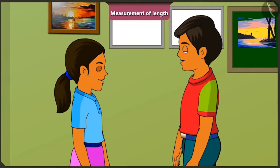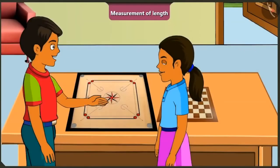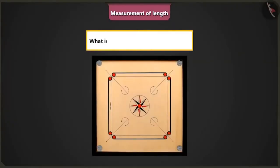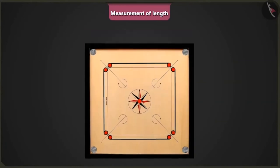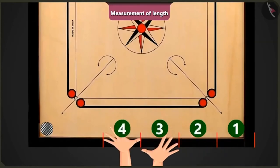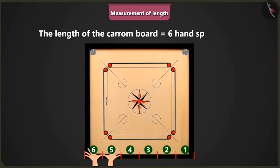I will give you a few more objects to measure the lengths of. Mintu, how will you measure the length of this carom board? I can easily measure the length of this carom board with my hands. Okay then, tell me what is the length of this carom board? 1, 2, 3, 4, 5 and 6. The length of this carom board is equal to 6 handspans of my palm. Well done, Mintu.